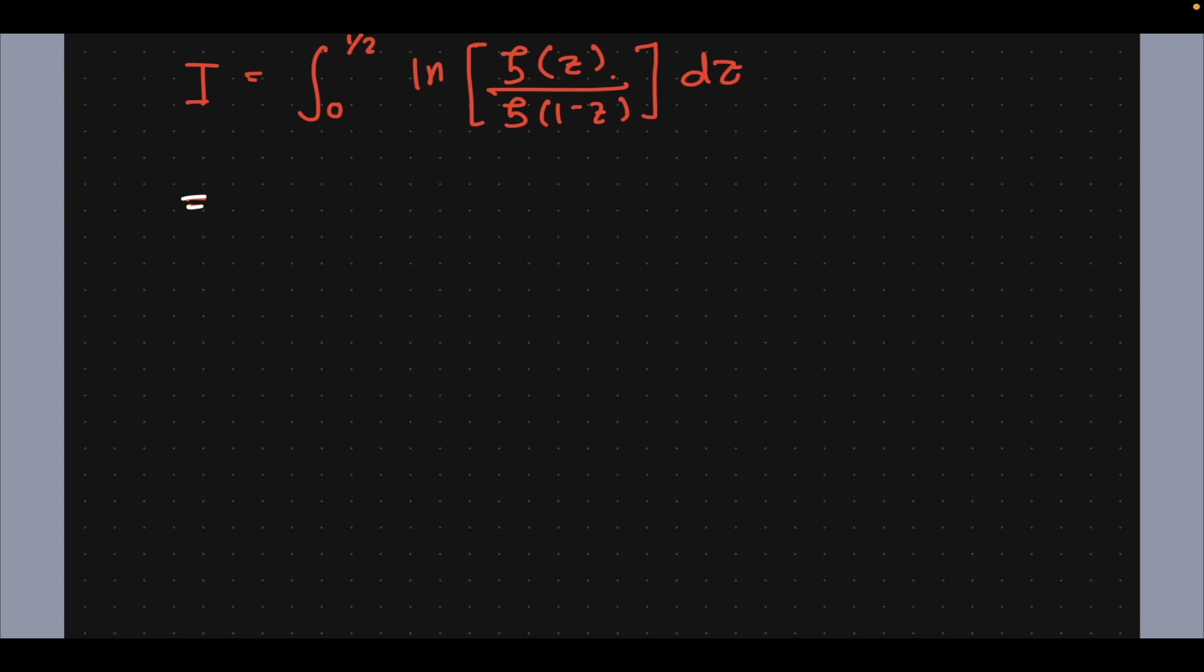If you watch that old video of mine, that's 2^z times π^(z-1) times sine(πz/2) times gamma(1-z) and the Riemann zeta of 1 minus z.